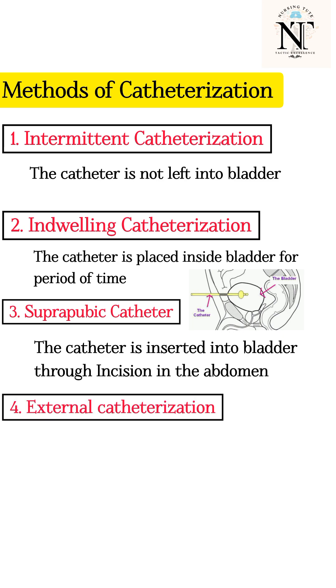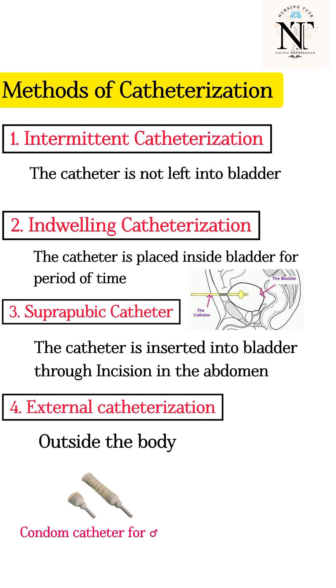External catheterization involves using a device placed outside the body to collect urine. Examples include the condom catheter for males and the female external catheter.